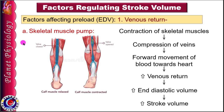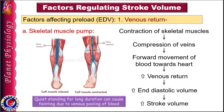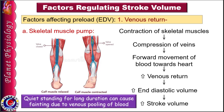Whenever skeletal muscles contract, especially those of the lower extremity, veins running between them get compressed and blood is pushed forward towards the heart. This increases venous return and hence end-diastolic volume, leading to increase in contractility, stroke volume and cardiac output. Valves in the venous system prevent backflow of blood during muscle relaxation. If a person stands still for a long duration, lack of muscle pump activity increases chances of fainting due to blood accumulating in the legs because of gravity.